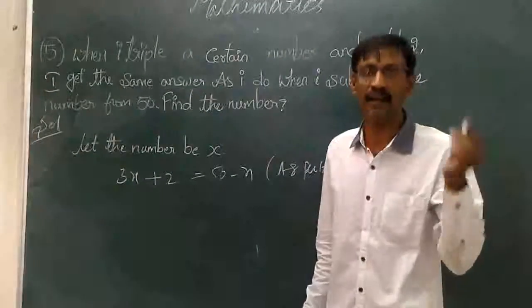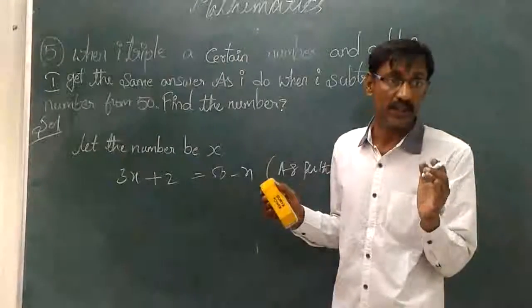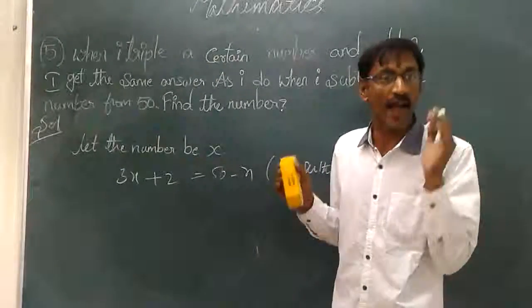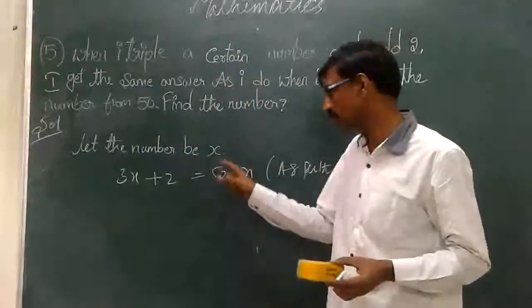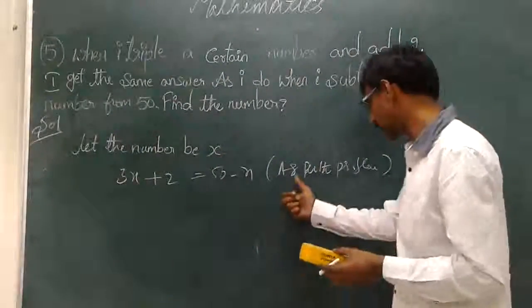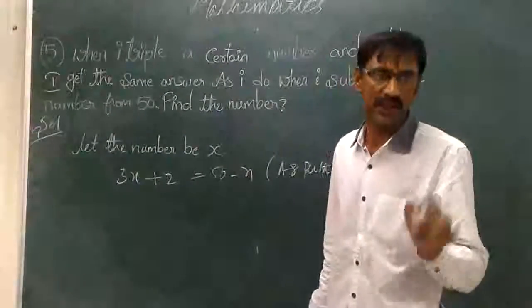You take a number and tripled it and add 2. We get some results. This is the same when we subtracted x from 50. The reason I written as per the problem. By separating x terms and constant.